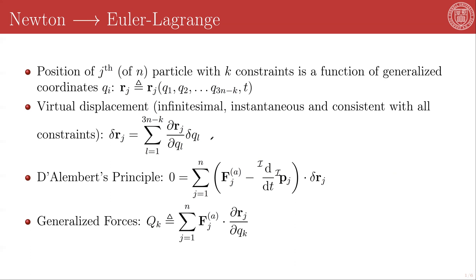Particle positions are defined implicitly via generalized coordinates, and so the position vector of the j-th particle, R_j, can be written as a function of the generalized coordinates q1 through q_{3n-k} and time.